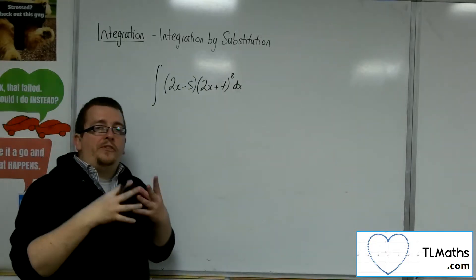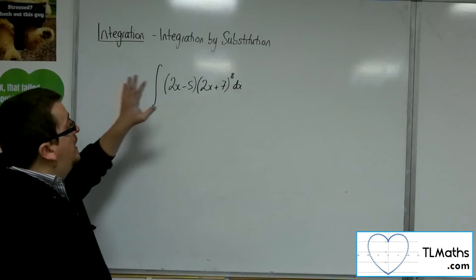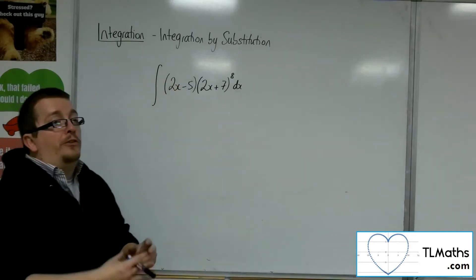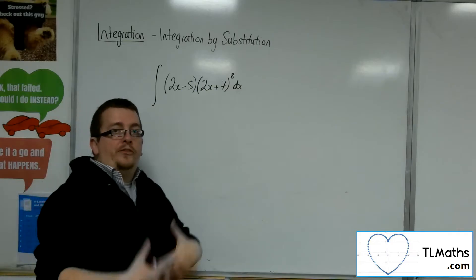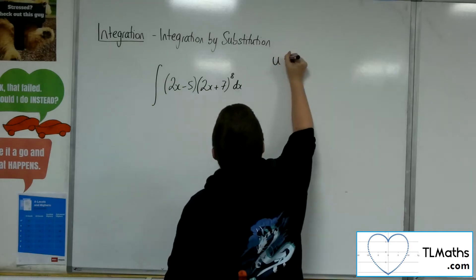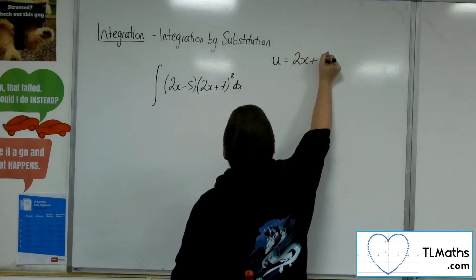Now you might be wondering, what does the substitution need to be? Because I've got expressions in both brackets. You're looking for the most complicated one, because you want to simplify the problem. So what you would use is a substitution for the 2x plus 7.